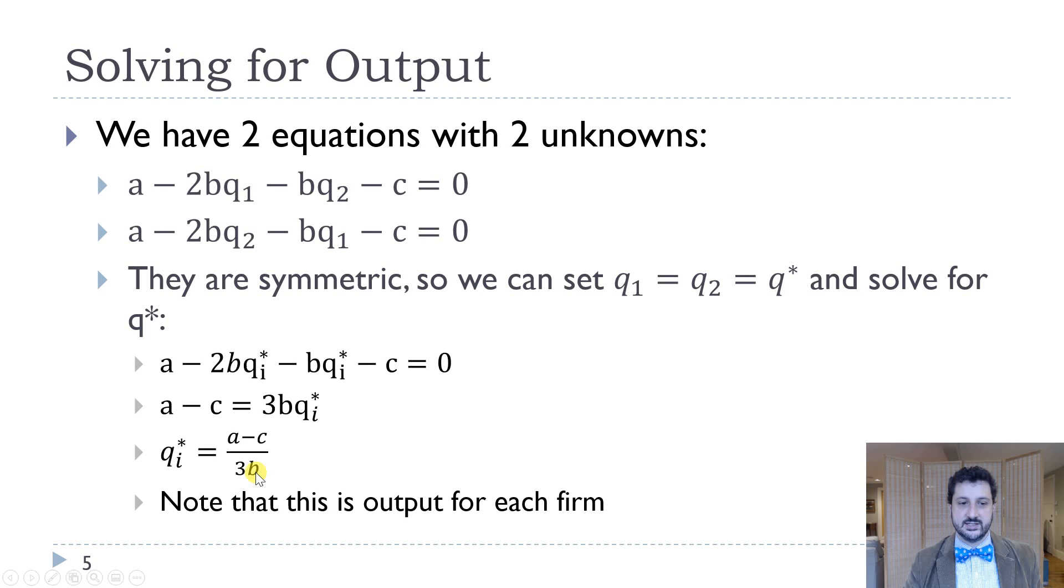Now, remember, for the monopoly, it was A minus C over 2B. So each firm is producing less, but in total, we're going to produce more. If you think of A minus C over B as one in the monopoly, you produce one half. Each firm produces one third here, but then that's going to be two thirds when we add them up together.